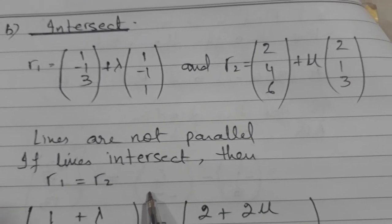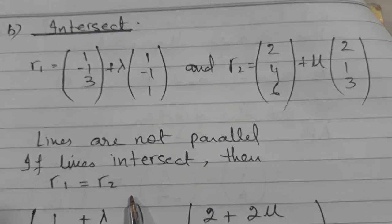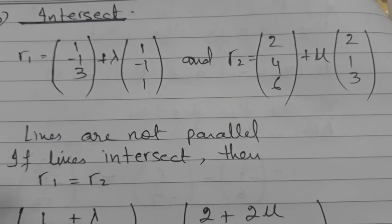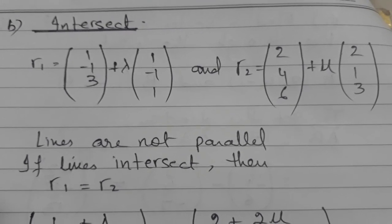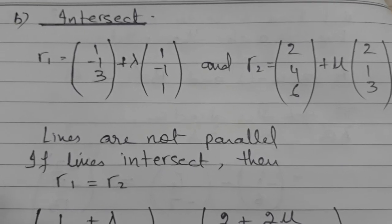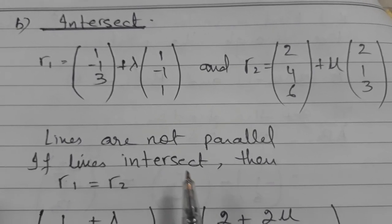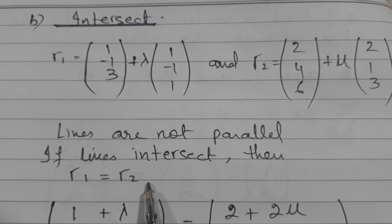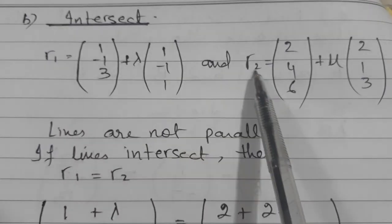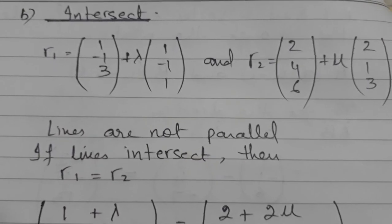If lines are not parallel and if we are saying that they are intersecting, because every time non-parallel lines are not intersecting in three dimension. So if lines are intersecting then r1 equals to r2 where r1 and r2 are any general points on the line.